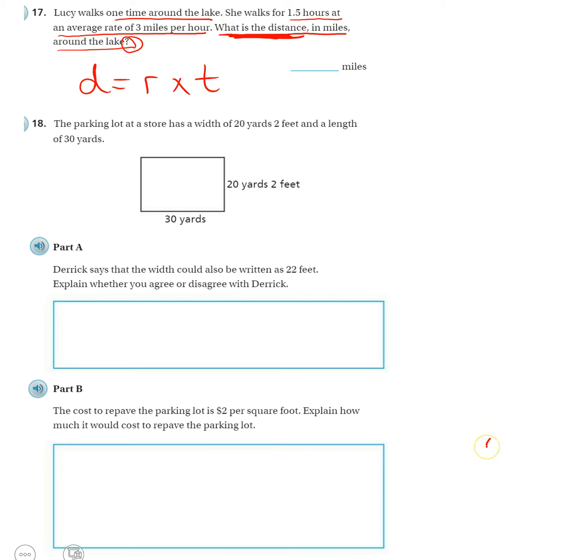So, distance equals rate times time. And now we need to know the rate and the time. She walks for an hour and a half. That is the time. And she walks at a rate of 3 miles per hour. So, there's our setup. Go for it.